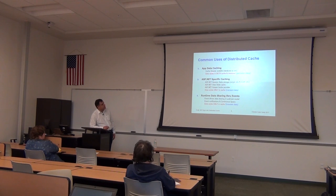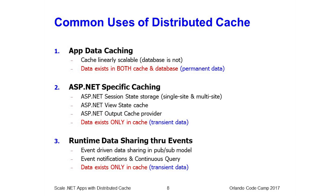For ASP.NET-specific caching the nature of the problem is different — the cache is the master store. You're no longer storing sessions in a database; the cache is the in-memory master. When an in-memory store is the master, the concern is volatility — memory is volatile, there's no persistence. Therefore a good distributed cache must replicate data across multiple servers to provide reliability. You don't want to lose a session while a customer is about to complete a purchase — losing that could cost thousands of dollars in sales per customer.